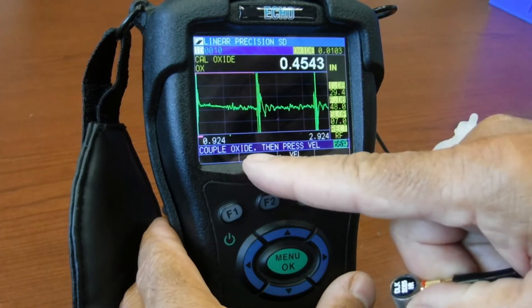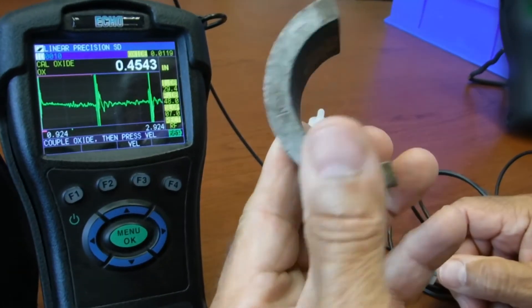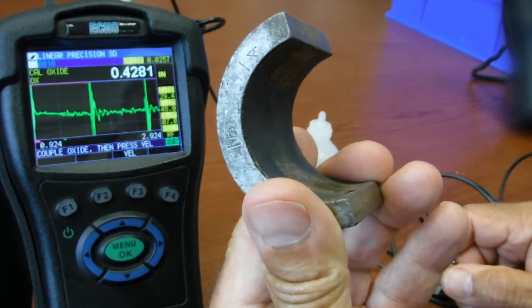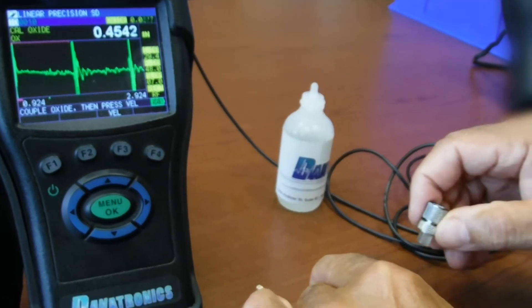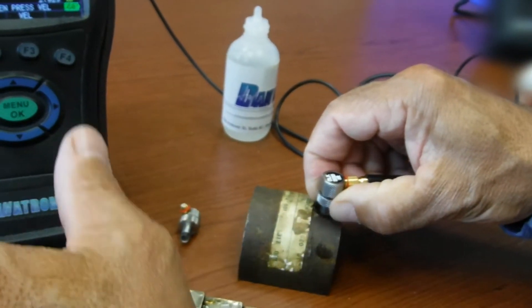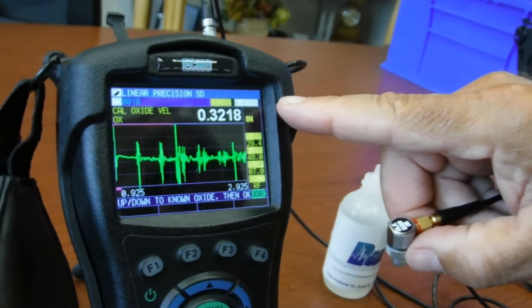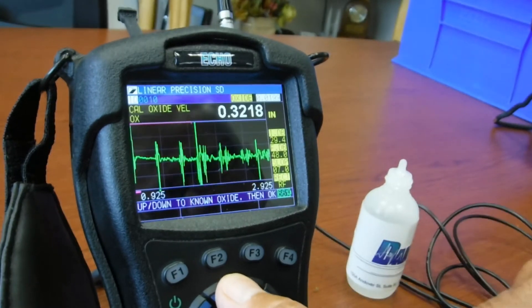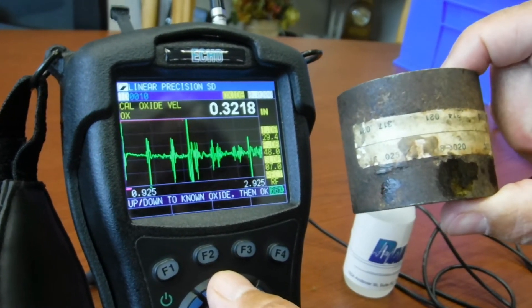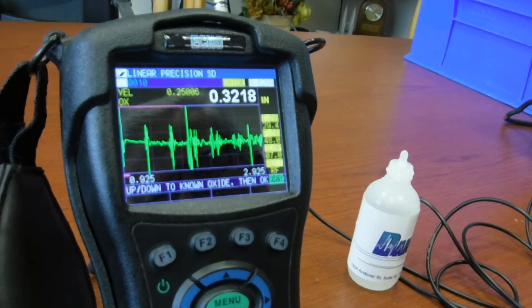Now the prompt says couple oxide and then press VEL. Here we have a sample of some oxide scale, roughly twenty thousandths of an inch on the inside of a tube that's roughly three hundred and twenty thousandths. I couple and I press the F3 VEL key. The number in the top right of 0186 will be scrolled up to 020 as indicated on the test sample. I press menu OK and the oxide velocity is calculated.